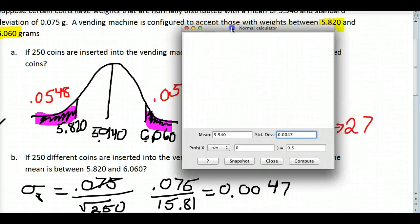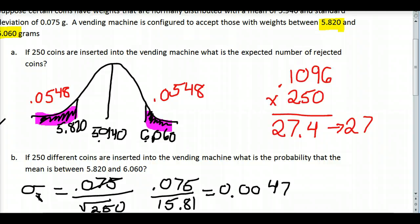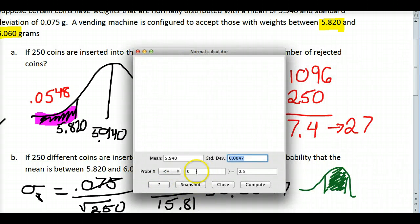Now let's take a look at what we want this to calculate. We want to know what is the probability that the mean is in between these two values. There's a couple of ways you can approach this, but I'm going to do the less than for both of these and we'll just subtract them. So we'll compute it for the first range, 5.820.